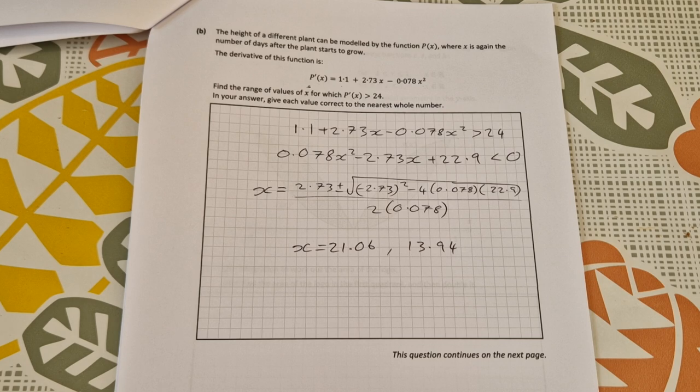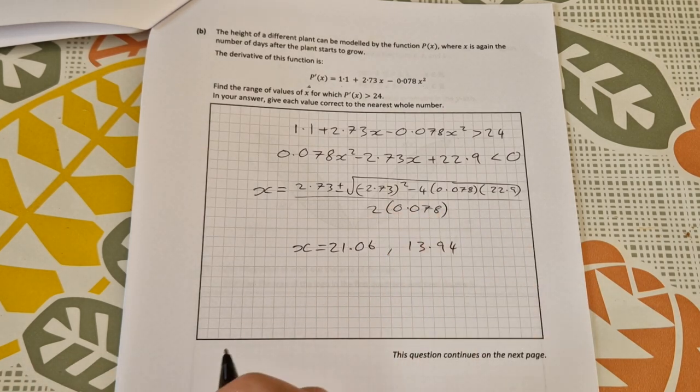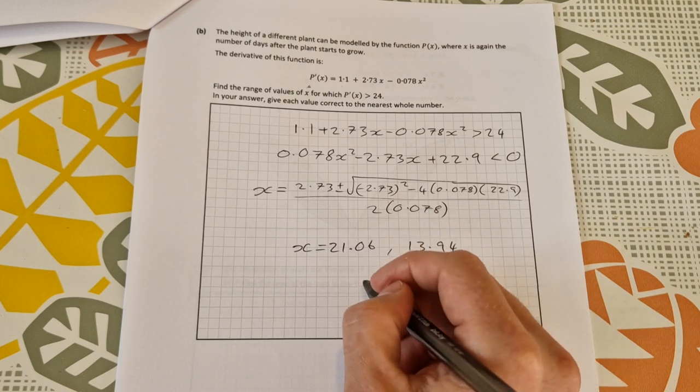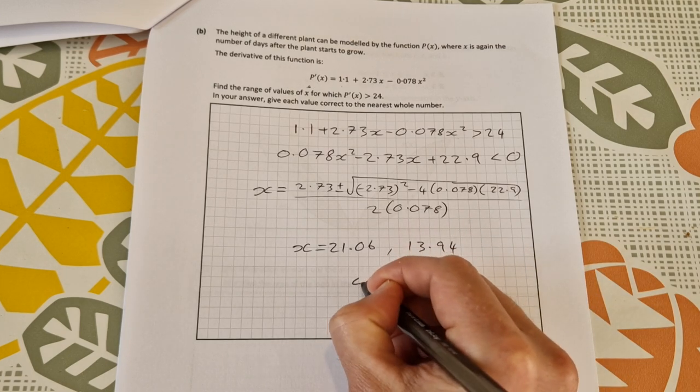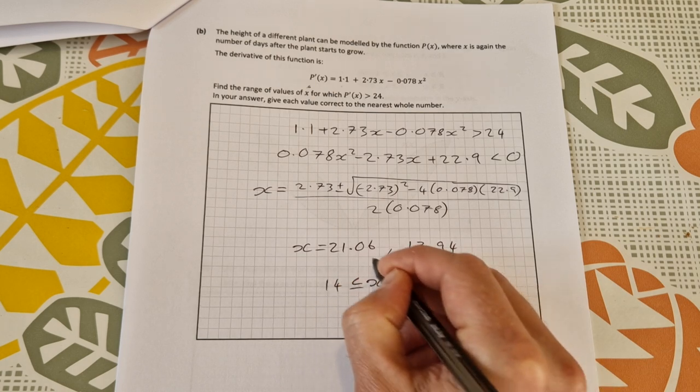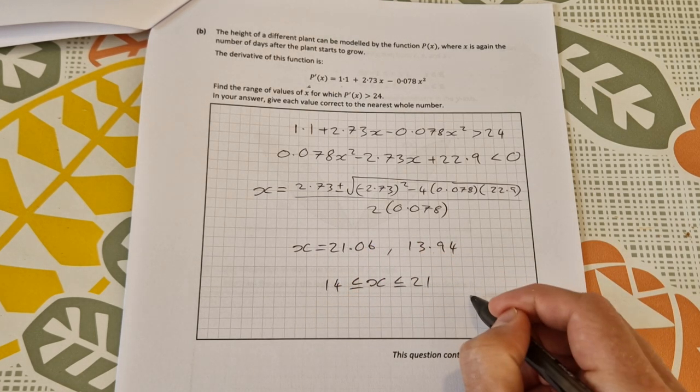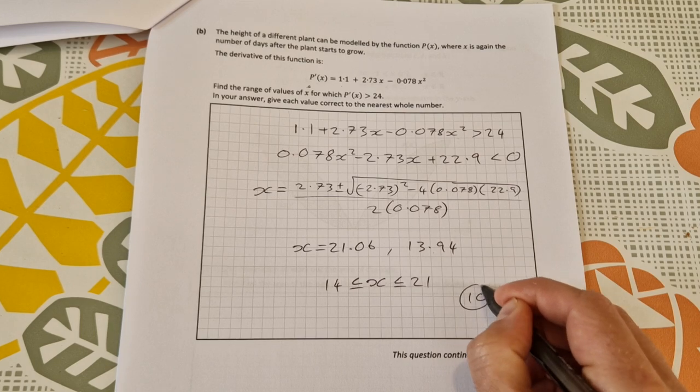They're asking for the range of values for which p'(x) is greater than 24, so when is x between those values and it's a natural whole number. So x is going to be greater than or equal to 14 but less than or equal to 21. That's your answer there and that is worth 10 marks.